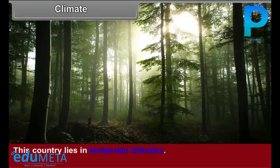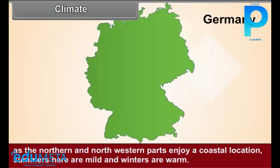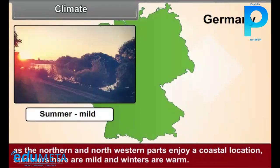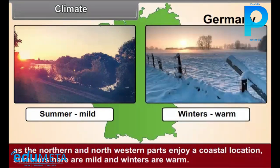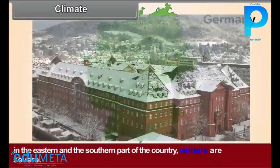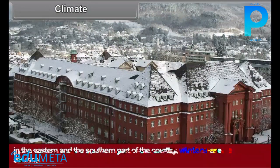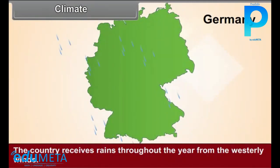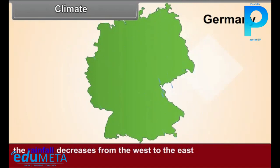Climate. This country lies in temperate latitudes. As the northern and northwestern parts enjoy a coastal location, summers here are mild and winters are warm. In the eastern and the southern part of the country, winters are severe. The country receives rains throughout the year from the westerly winds. The rainfall decreases from the west to the east.